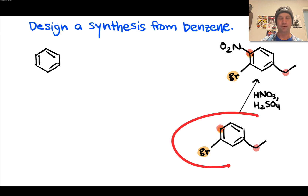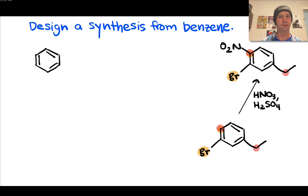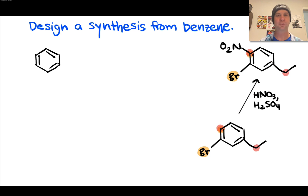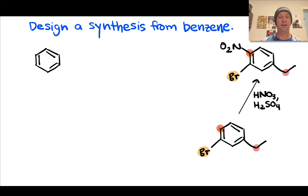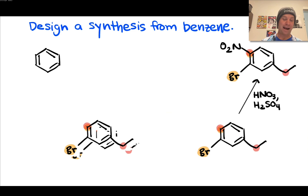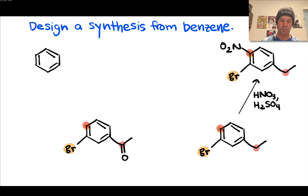We reach a tricky crossroads: bromine and ethyl are meta to each other, yet each is individually an ortho/para director. We can't work back to bromobenzene and simply ethylate — Friedel-Crafts alkylation would install the ethyl group ortho or para to bromine, not meta. Instead, we take advantage of a functional group manipulation of the ethyl side chain to convert it to a meta director, allowing strategic installation of bromine.